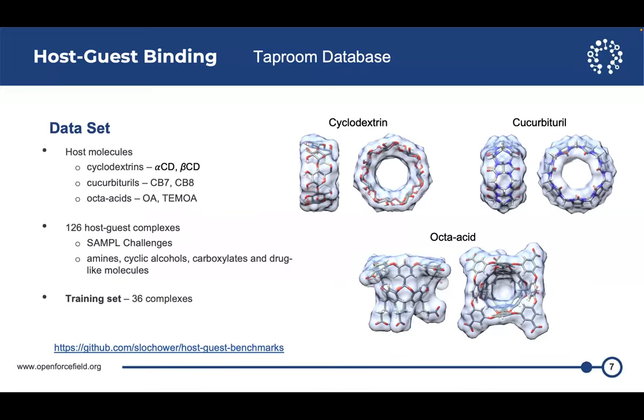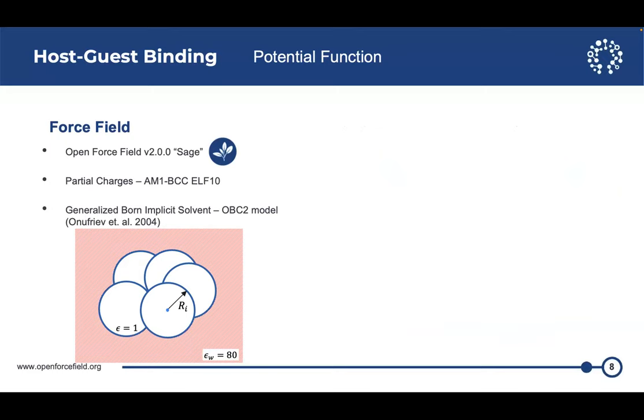A bit about the Taproom database. I've curated about 126 host guest complexes comprising of cyclodextrins, cucurbiturals, and octa acids. Most of these were curated from the SAMPL blind challenges. The guest molecules range from simple cyclic alcohols, carboxylate acids, to drug-like molecules. I've hand-selected 36 of these complexes as the training set. And we've made this available online at GitHub.